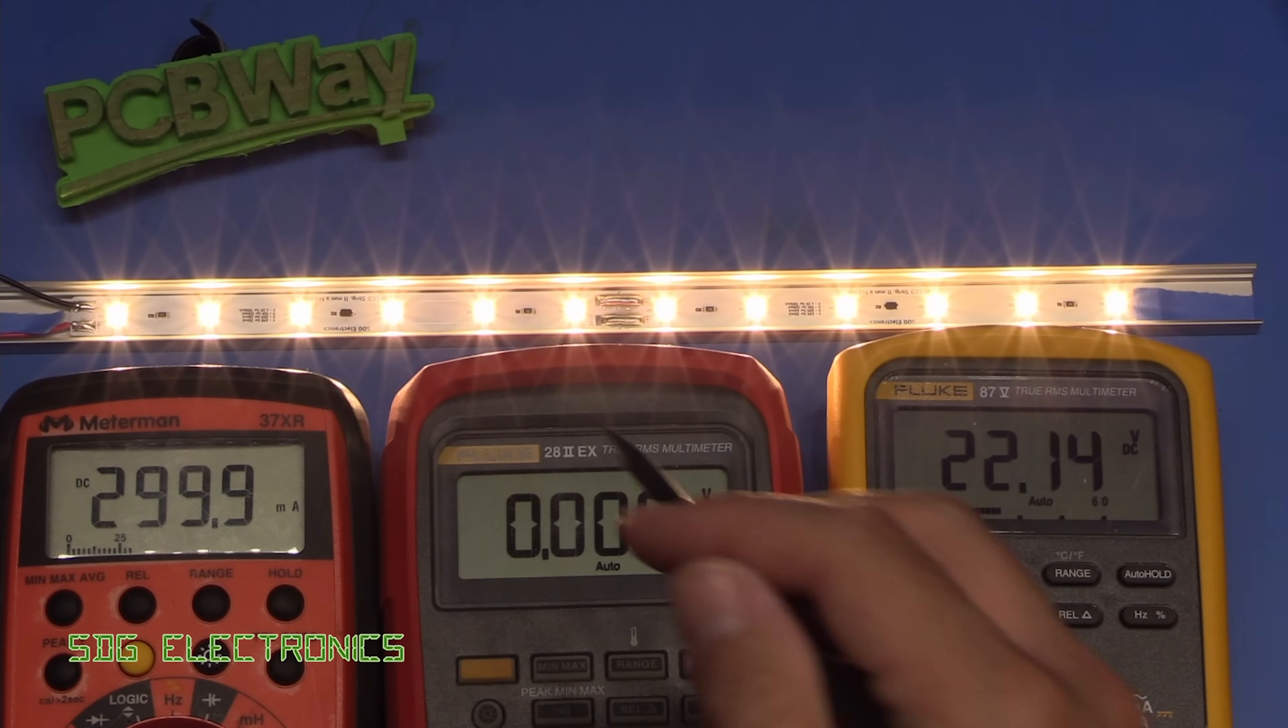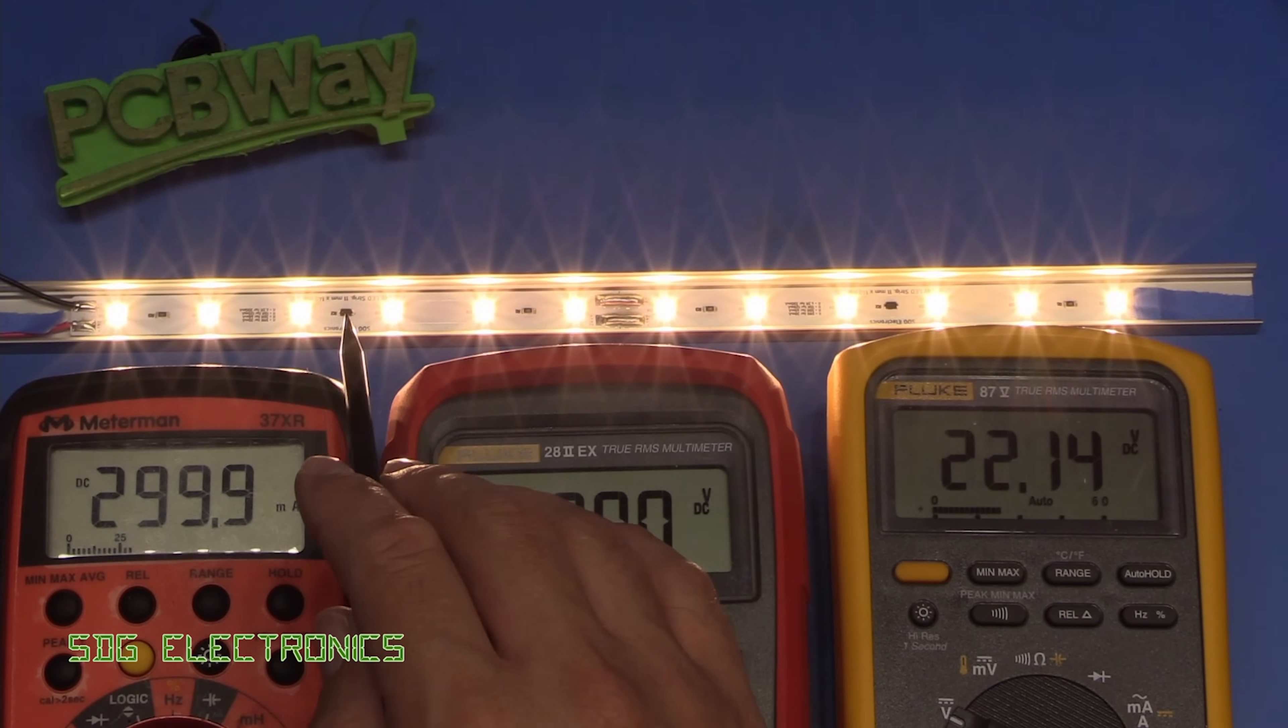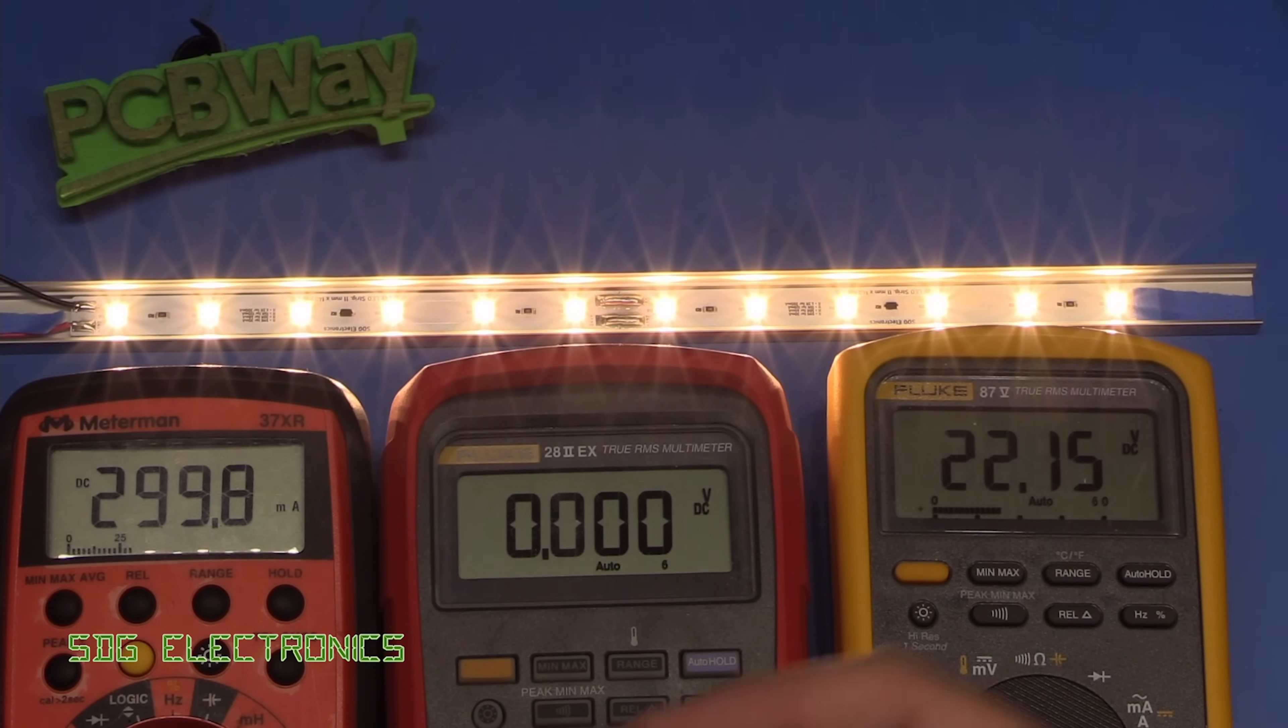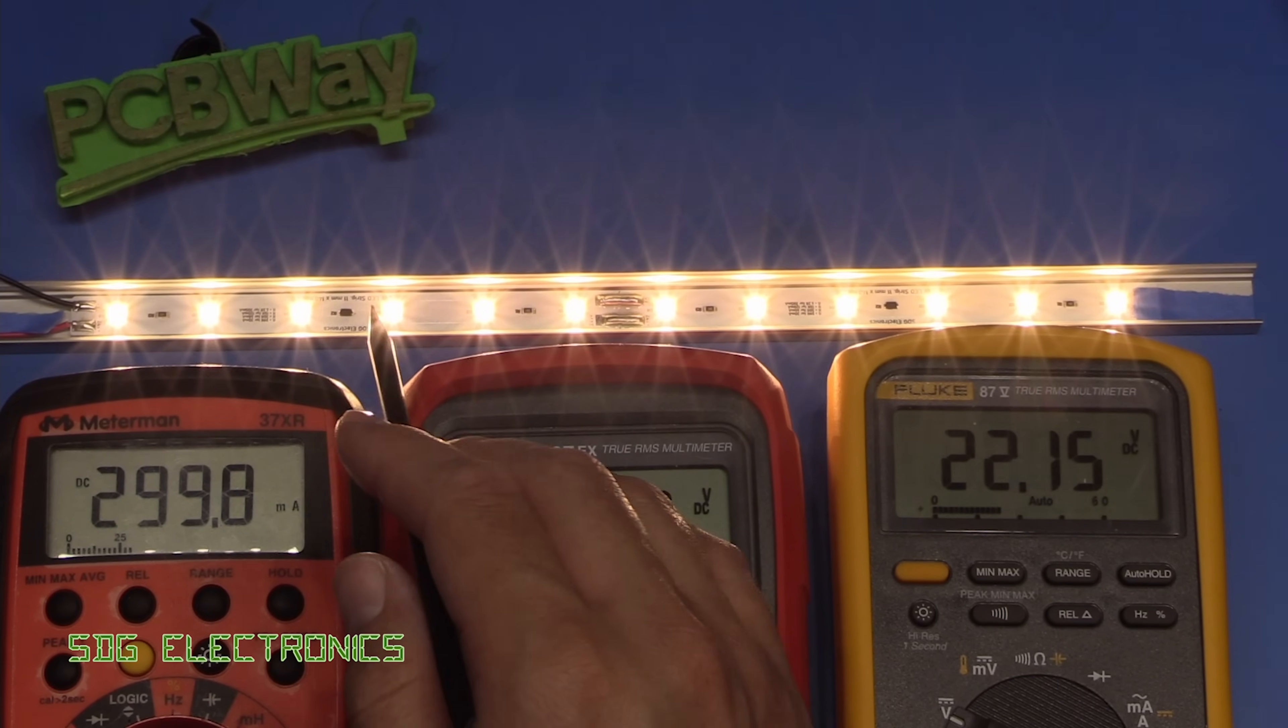These LEDs will happily run all the way up to about 90 degrees C without too much issue and the same for the diode. Above that they'll obviously still work but then our junction temperature is going to be quite a bit hotter than what we can see externally